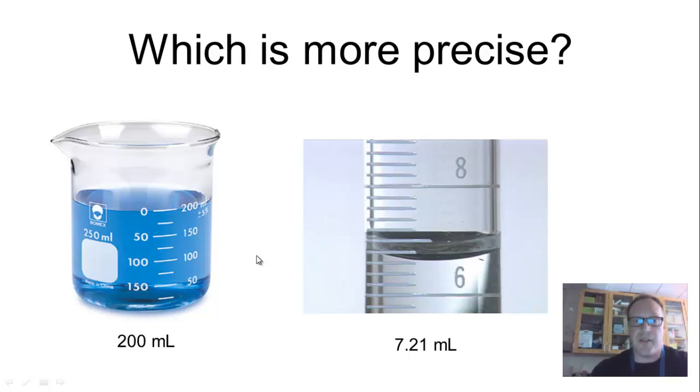Well, what you should have answered here is this one. This 7.21 is more precise, and the easy way to tell that is that there's more numbers past the decimal point. This is a very precise measurement, whereas this is not a very precise measurement. And another thing to really realize here is that a beaker is not a very precise piece of equipment to use to measure a volume, whereas a graduated cylinder is a more precise piece of equipment to measure a volume.